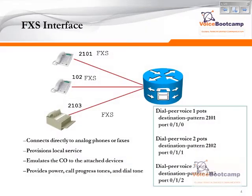An FXS interface allows a Cisco router to connect to an endpoint such as an analog phone using an RJ11 cable, which connects directly to an analog phone, fax machine, or modem.